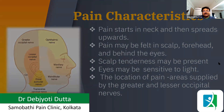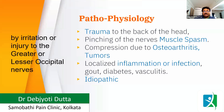Why can occipital neuralgia occur? It is because of irritation or injury of the greater and lesser occipital nerve, which may be due to trauma at the back of the head, road traffic accidents, or acceleration-deceleration injury. It may also be due to pinching of the nerves by muscle spasm, compression by osteoarthritis or tumours, or localized inflammation or infection such as gout, diabetes, or myositis. Sometimes no cause is found, and we call it idiopathic.